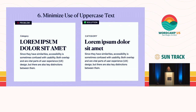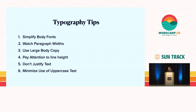Number six: minimize the use of uppercase text. Headlines in all caps are very hard to read. Limit uppercase text that is not user-inputted, such as categories or metadata, so that it's capitalized only by CSS. This reduces the error of a user typing in all caps into the admin. Some screen readers might actually read all caps as acronyms, which makes it very difficult for some people. If you're going to have meta in all caps, adding letter spacing also helps improve scanning. Typography recap: simplify body fonts, watch paragraph widths, use large body copy, pay attention to line height, don't justify text, and minimize the use of uppercase.